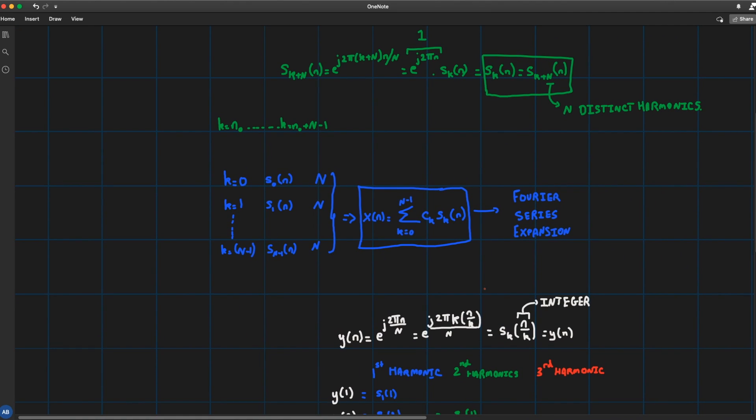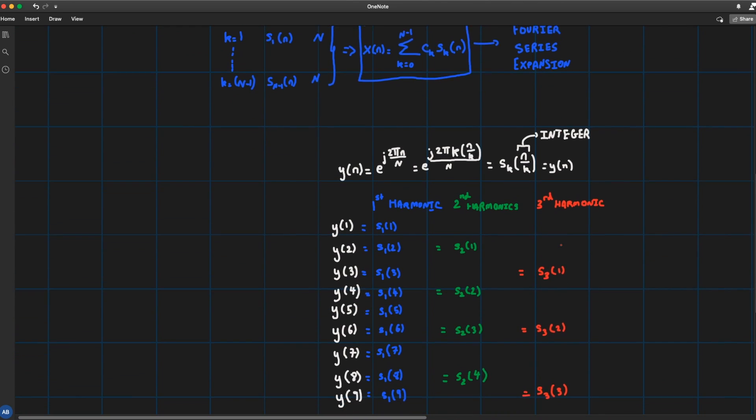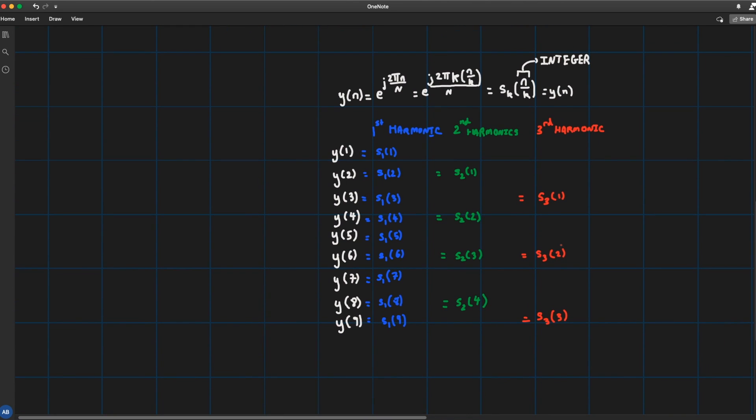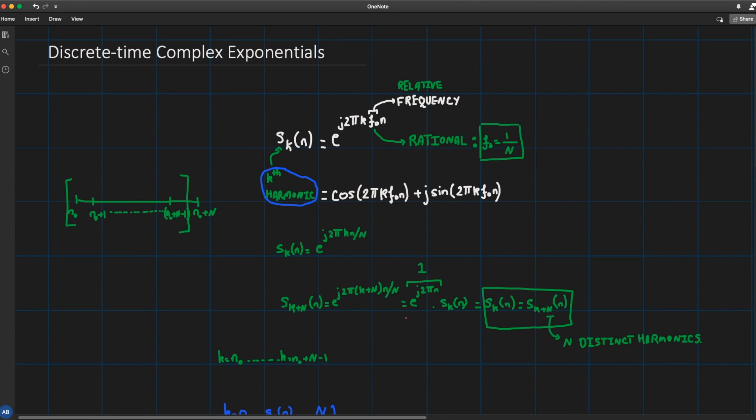We'll see how those harmonics are used to define the Fourier series expansion in the discrete time case and finally we'll be giving an example on how a generic table could be used to generate all harmonics of interest. So without further ado let's get started.